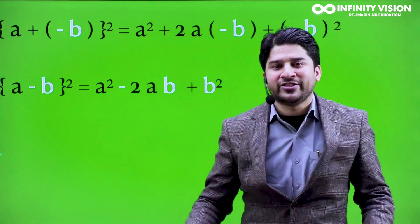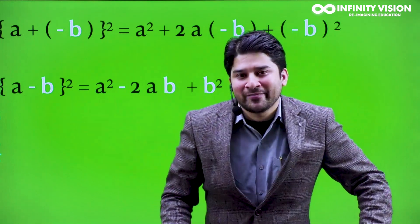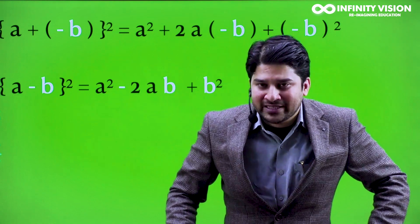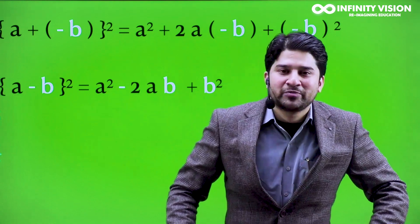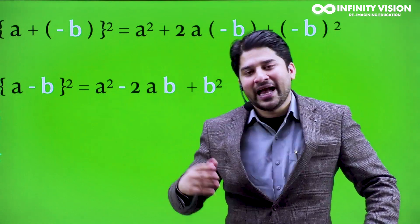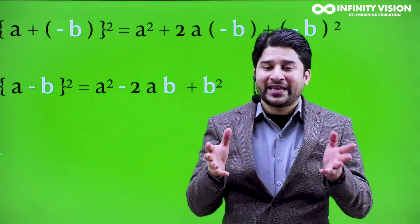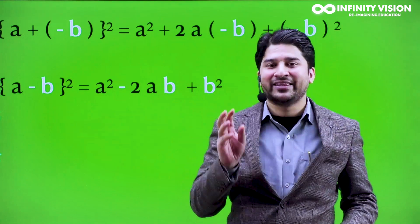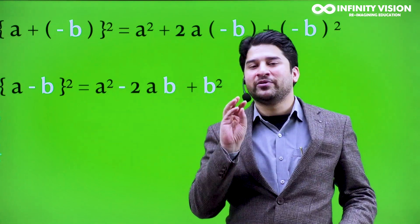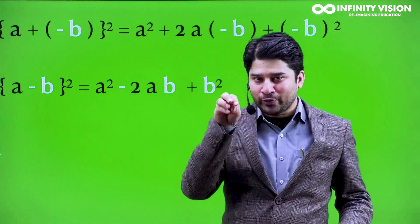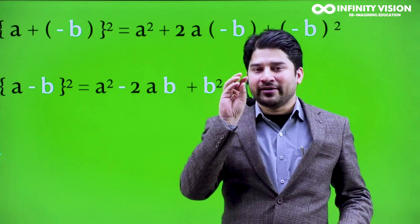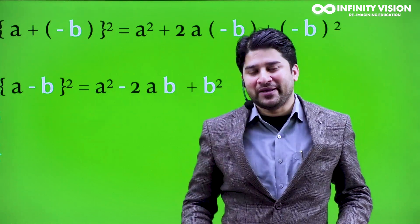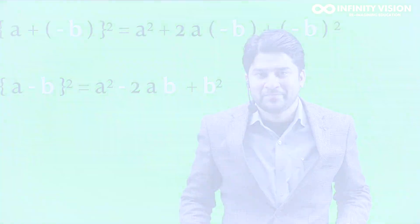So we had these two methods. The first was a totally geometric visualization of (a minus b) whole square, and in the second method we first visualized (a plus b) whole square and then used elementary algebra to plug minus b in place of b.